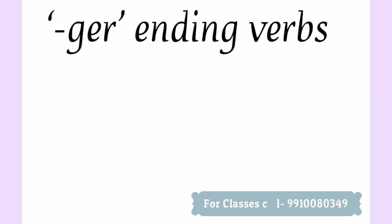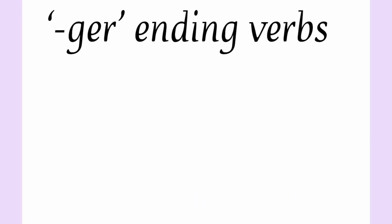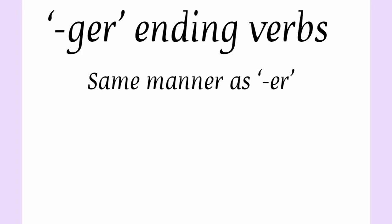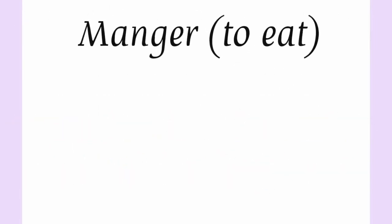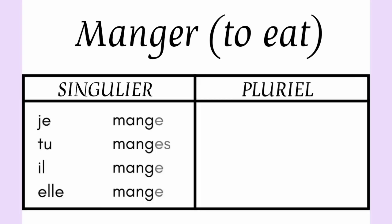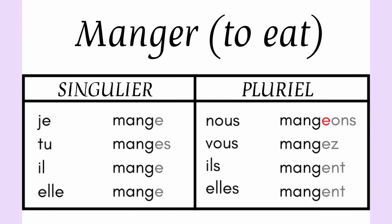GER ending verbs are conjugated in the same manner as all other ER ending verbs, but the only difference is that we add an E in the nous form before the ending ONS. For example, the verb manger, which means 'to eat': je mange, tu manges, il mange, elle mange — these follow the same regular rule. But 'nous mangeons' — can you see that extra E between mang and ons? M-A-N-G-E-O-N-S. Vous mangez, ils mangent, elles mangent remain the same.